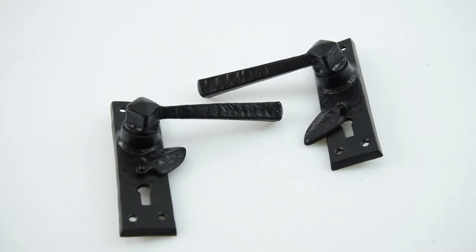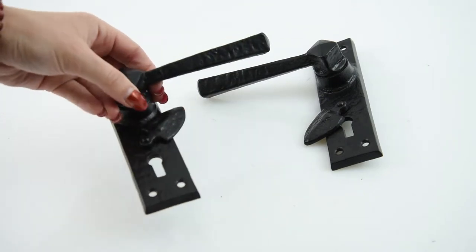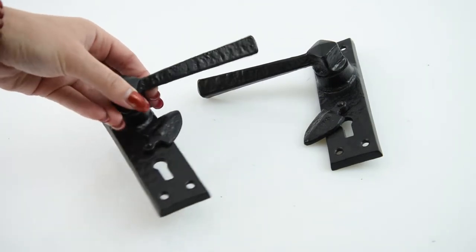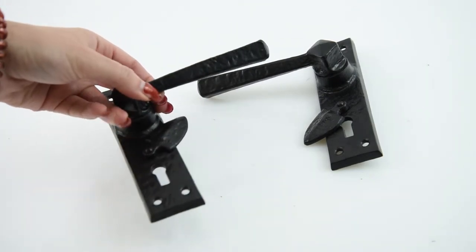This is the D5282 Hitchcock lever door handle. It's made from malleable iron which is much stronger than cast iron as it goes through an additional annealing process.